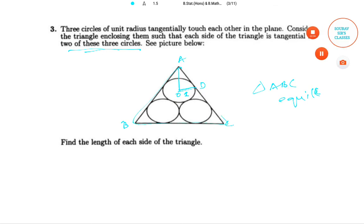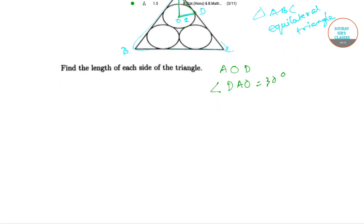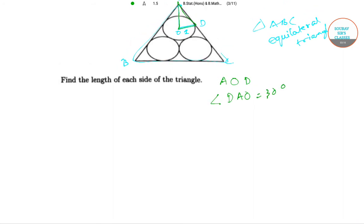Now, if we take into consideration triangle AOD, here angle DAO is equal to 30° as our triangle ABC is an equilateral triangle. Now from here, we will have AD/OD = cot 30°.